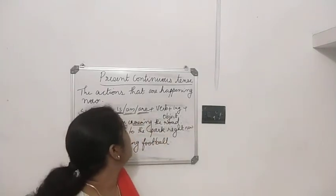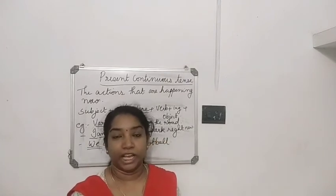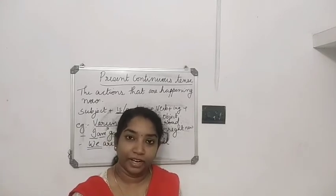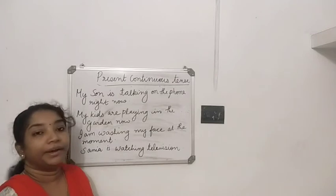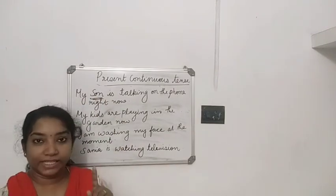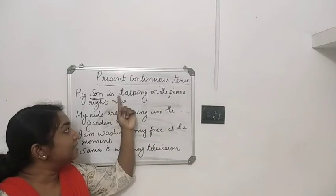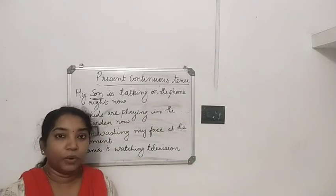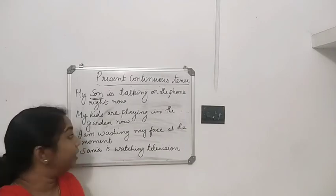The present continuous tense is used for the action that is happening right now. What are the things happening now — there you have to use present continuous tense. So I will give you some more examples. 'My son is talking on the phone right now.' Son is singular, so we have to use 'is.' Son is talking — verb plus ING — talking on the phone right now. Now he is doing it, so we have to use present continuous tense.